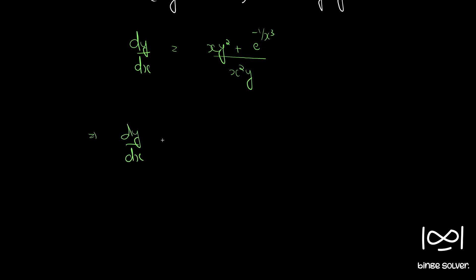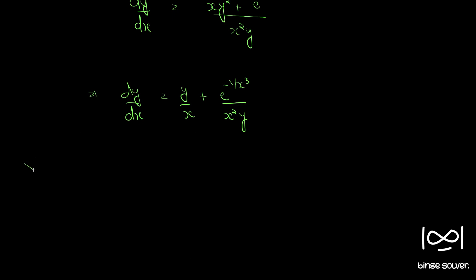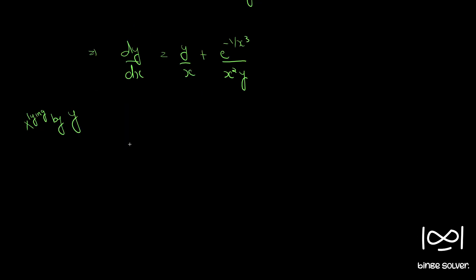Simplifying, dy by dx equals x y squared divided by x squared y, which becomes y by x, plus e raised to minus 1 by x cubed divided by x squared y. Multiplying through by y and bringing y by x to the left-hand side, we have y into dy by dx minus y squared by x equals e raised to minus 1 by x cubed, divided by y squared by x squared.